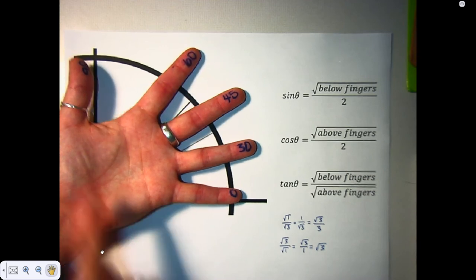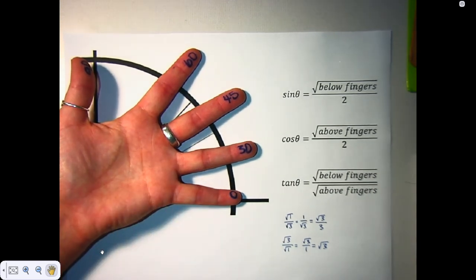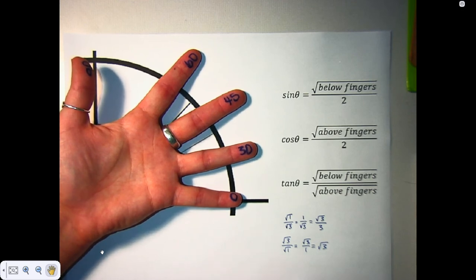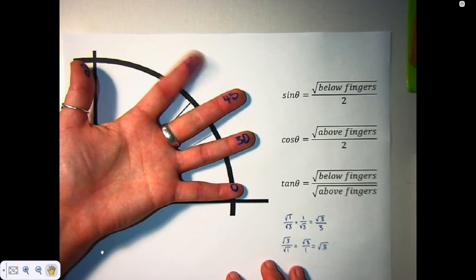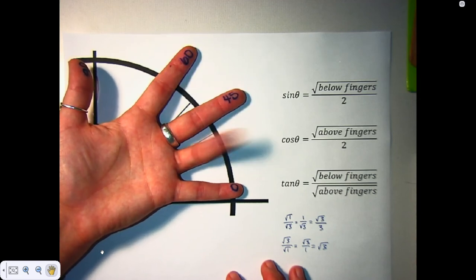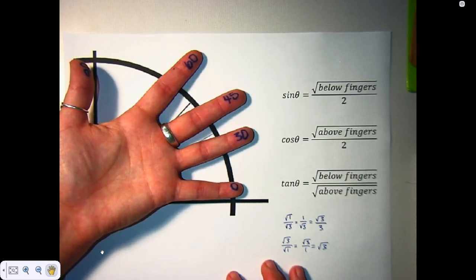So again, this quadrant 1, which is all of the angles we're going to need to know and have memorized, can very easily be found with your fingers. This finger is 30, 45, 60. And sine is the below fingers, cosine is the above fingers, and tangent is below divided by above.